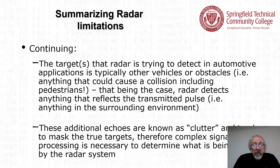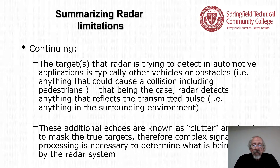The targets radar tries to detect in automotive applications are typically other vehicles or obstacles — anything that could cause a collision, including pedestrians. Radar detects anything that reflects the transmitted pulses, anything in the surrounding environment. These additional echoes are known as clutter and tend to mask the true targets. Therefore, complex signal processing is necessary to determine what is being seen.